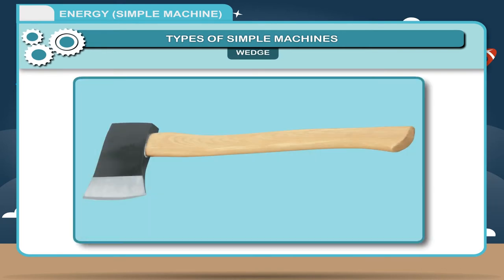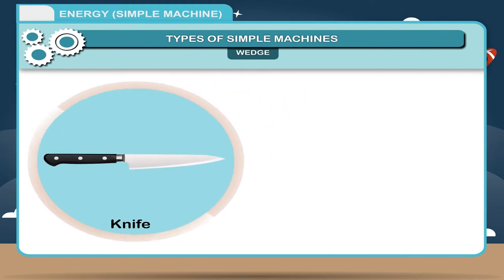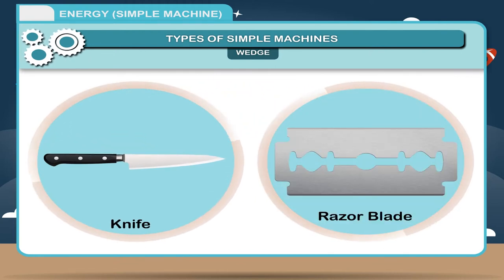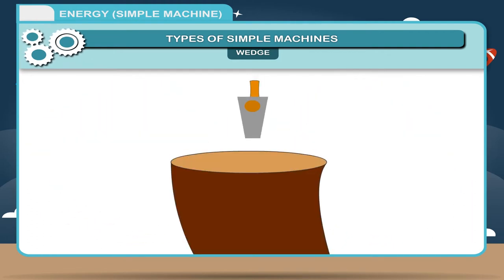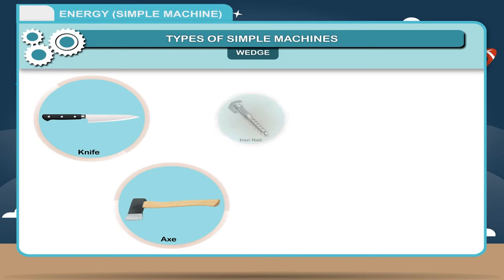Wedge: A wedge is also an example of an inclined plane. It is a portable inclined plane. A wedge is a simple machine that has two or more inclined surfaces joined together to form a sharp or pointed edge. The wedge of a knife and razor blade is made up of two inclined planes put together. Wedges work on the principle of reducing the surface area so that a minimum force is required to produce the maximum pressure. Wedges are generally used to split or pierce materials. Knife, axe, iron nail, pin and sewing needle are the examples of wedge.